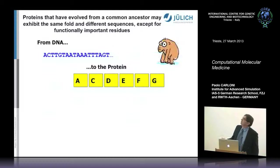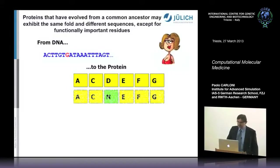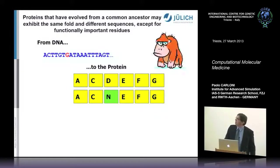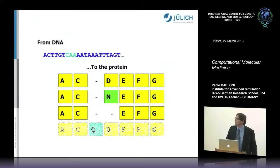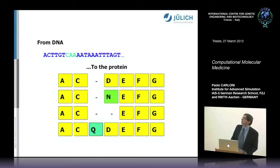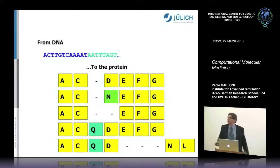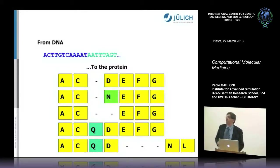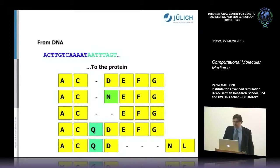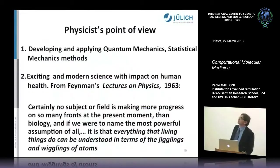We can try to map the sequence of human proteins onto the structure of a bacterial protein, which are usually more available in databases, by aligning the sequences. Why should we be interested in this type of computation? For a physicist there is a lot to learn and many fancy techniques. Richard Feynman said back in 1963 that no other field is making more progress, and that everything living things do can be understood in terms of the jigglings and wigglings of atoms—practically predicting the power of molecular dynamics.